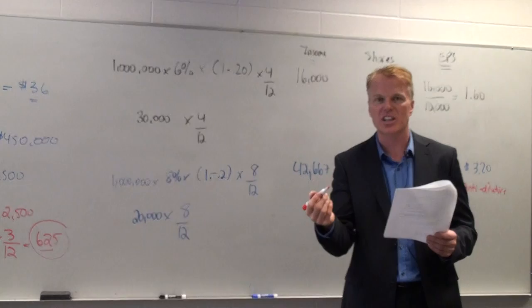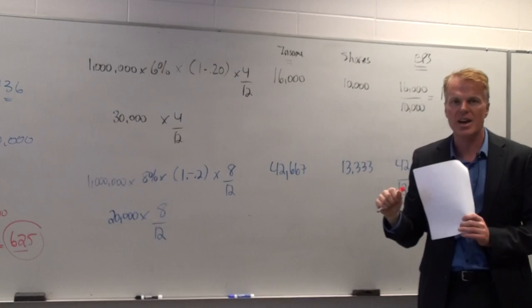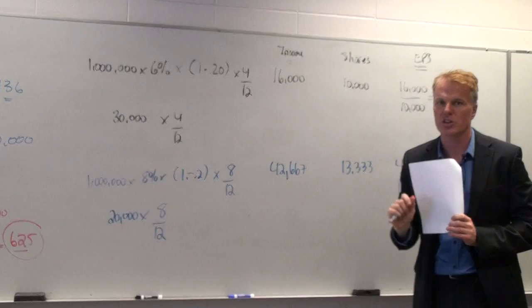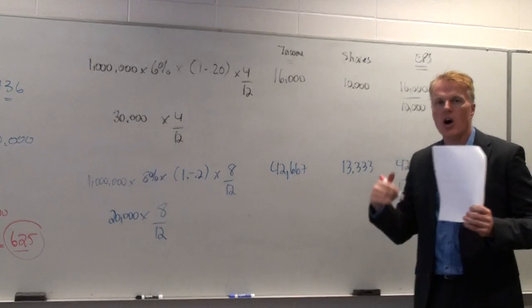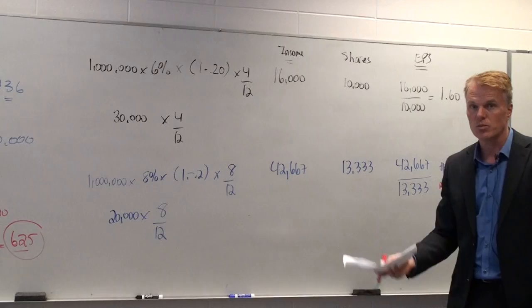When it's anti-dilutive, we don't include it. Now why do I say it's anti-dilutive? Well, when you did your basic EPS calculation, it was $2.31. This is $3.20. This $3.20 would cause that number to go up. But when we look at diluted EPS, we only want the number to go down. Anything that causes the number to go up, we don't include. So right off the bat, I know this is anti-dilutive. On a test, you write anti-dilutive here. That's all I need to see.